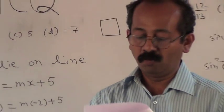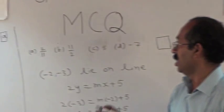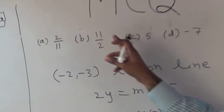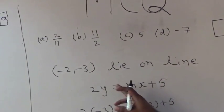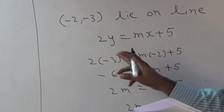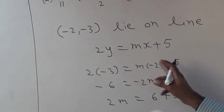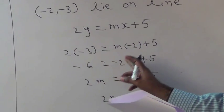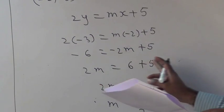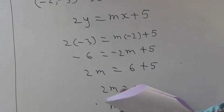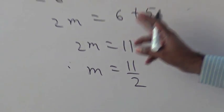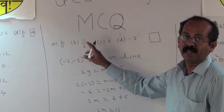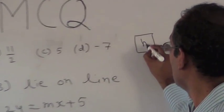Last example: If (−2, −3) is a point on the line 2y = mx + 5, find m. Alternatives: A) 2/11, B) 11/2, C) 5, D) −7. Substituting x = −2, y = −3: 2(−3) = m(−2) + 5, so −6 = −2m + 5, giving 2m = 11, so m = 11/2. Alternative B represents 11/2, so B is the correct answer.